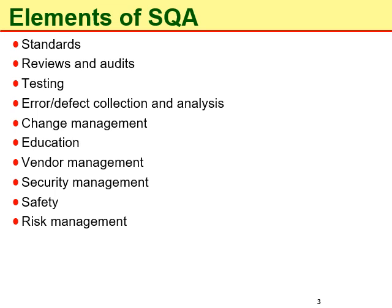Design inspection is done using a checklist that inspects certain areas of software design. For example: general requirements and design, functional and interface specifications, conventions, requirements traceability, structures and interfaces, logic, performance, error handling and recovery, testability, extensibility, and coupling and cohesion.